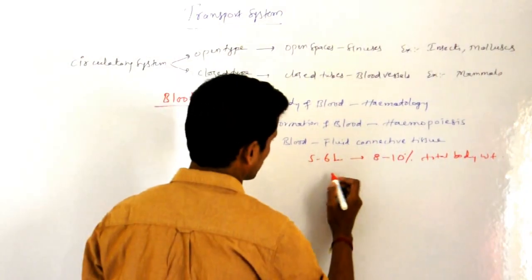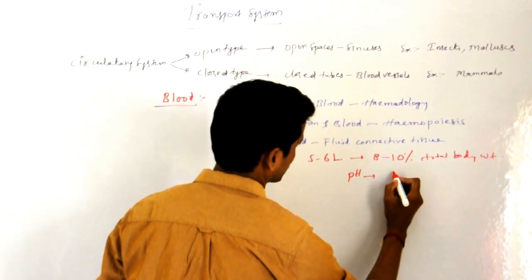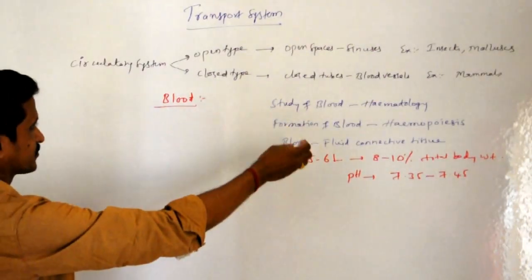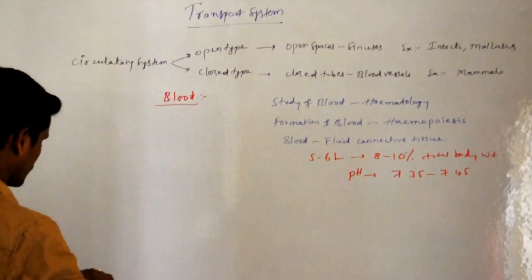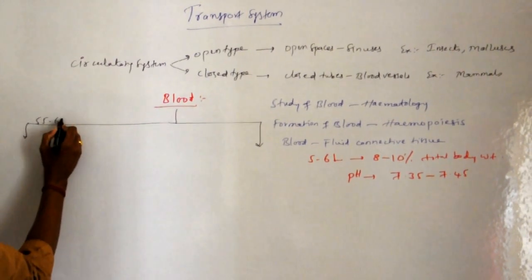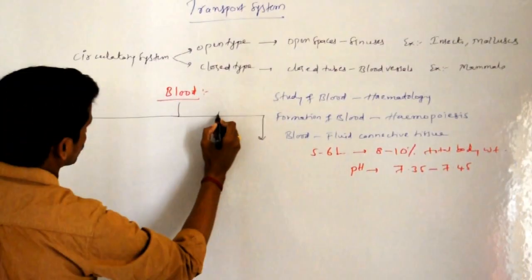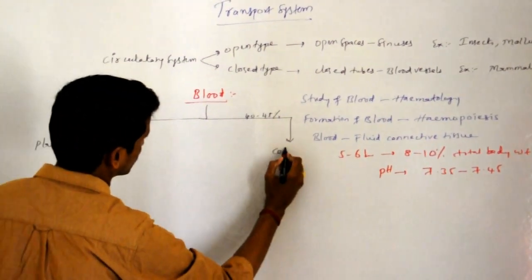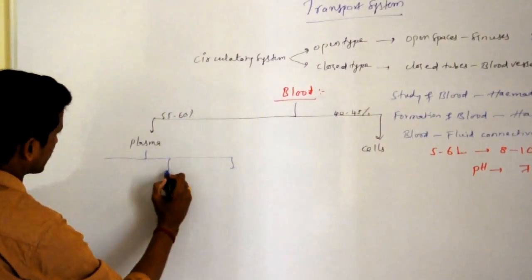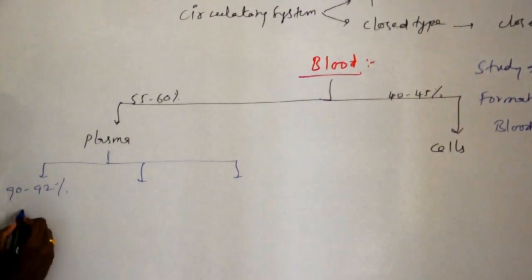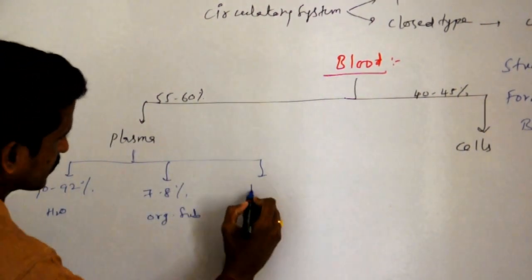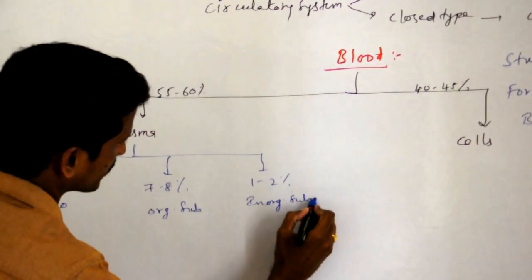We need to remember the pH of blood. The pH of blood is slightly alkaline, approximately 7.35 to 7.45. Blood possesses 55 to 60 percent plasma and 40 to 45 percent cells. Plasma constitutes 90 to 92 percent water, 7 to 8 percent organic substances, and 1 to 2 percent inorganic substances.